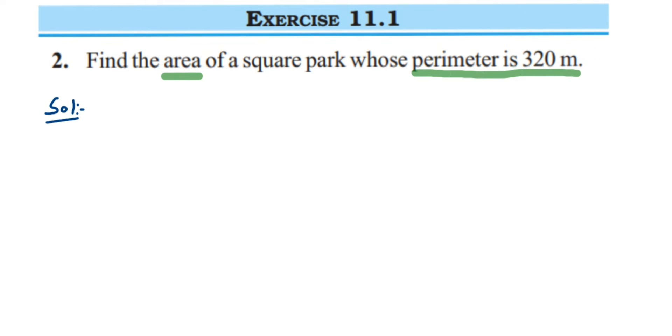Let's write down what is given. Given: perimeter of square park equals 320 meters. This is given to us. Now we know that perimeter of a square is 4 times the side.